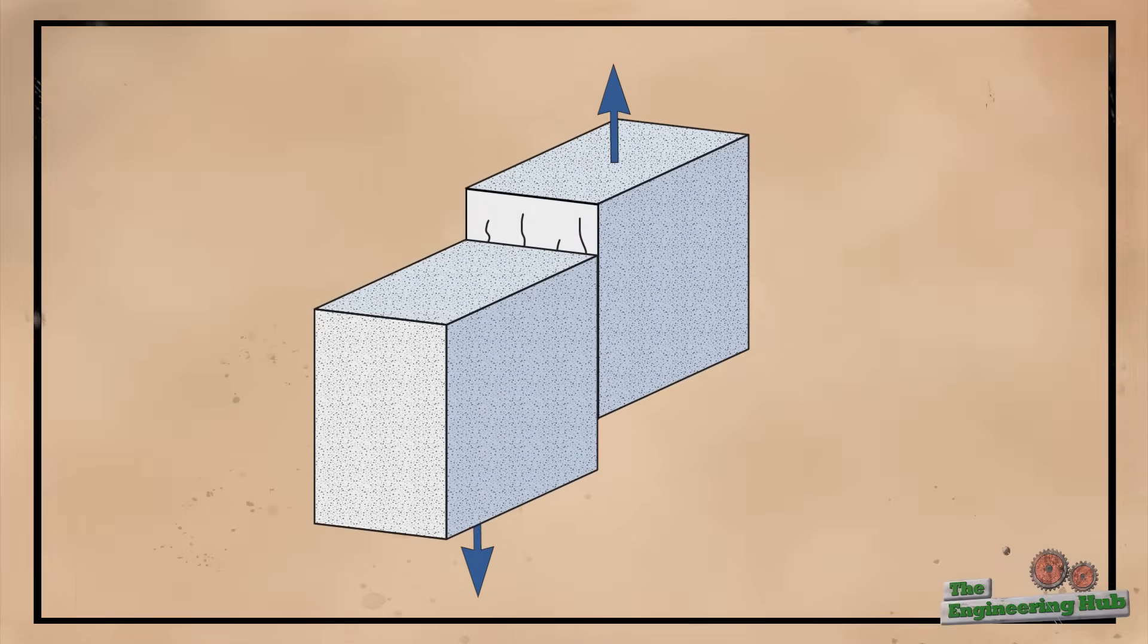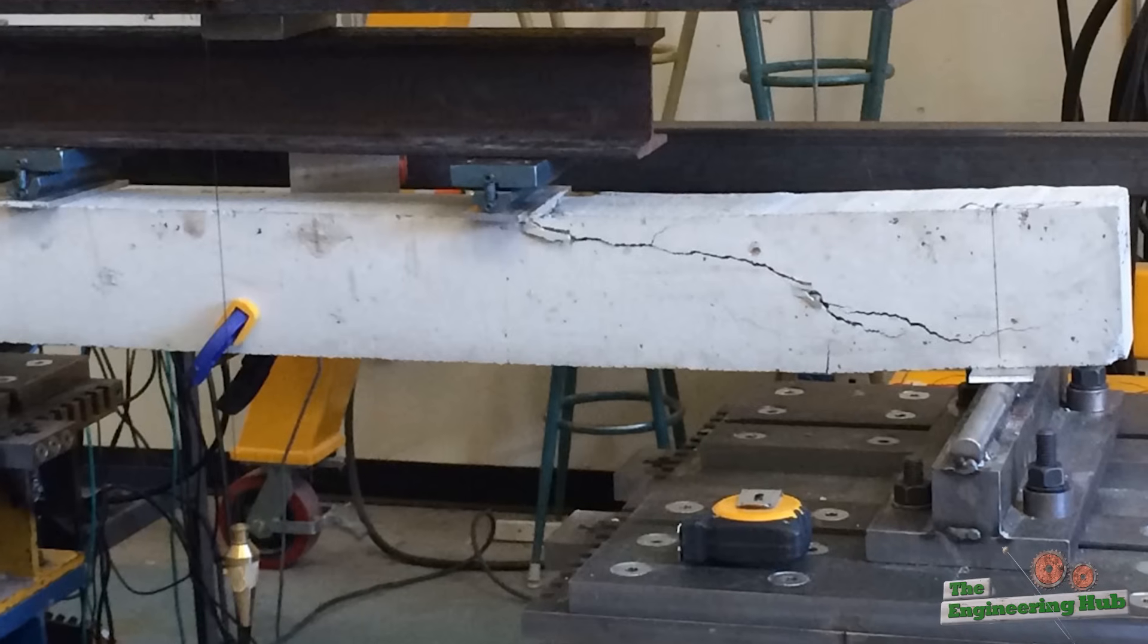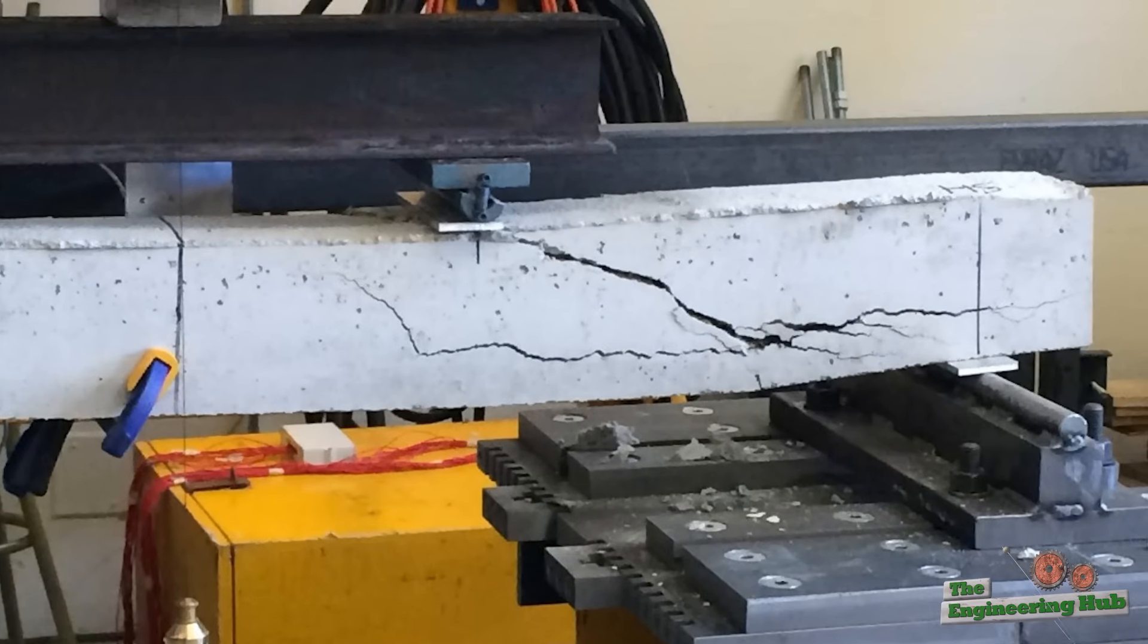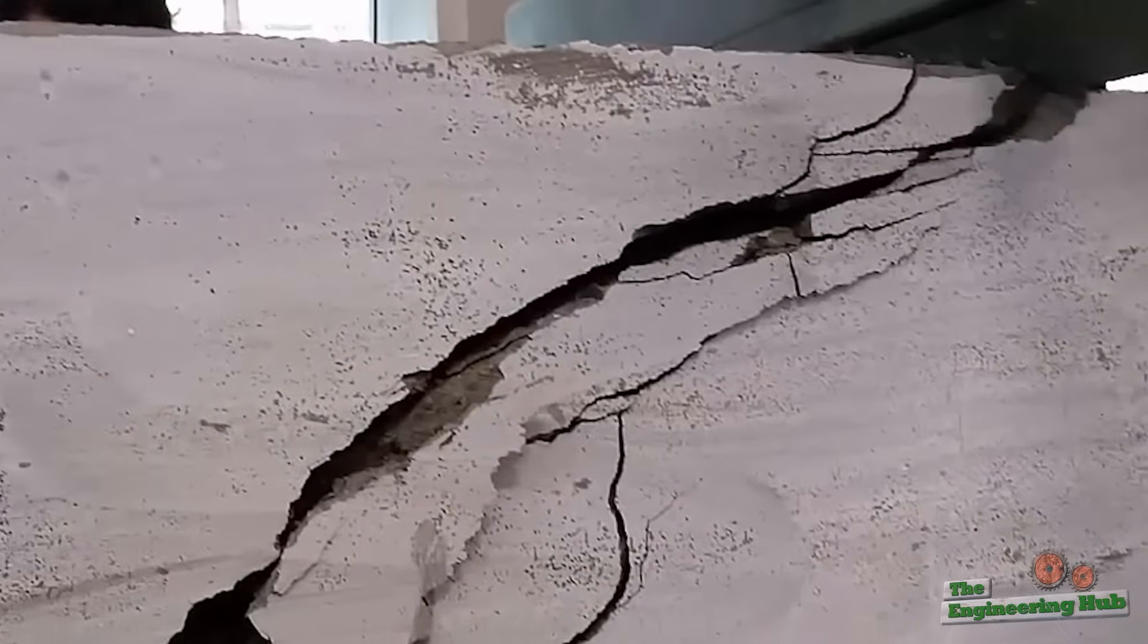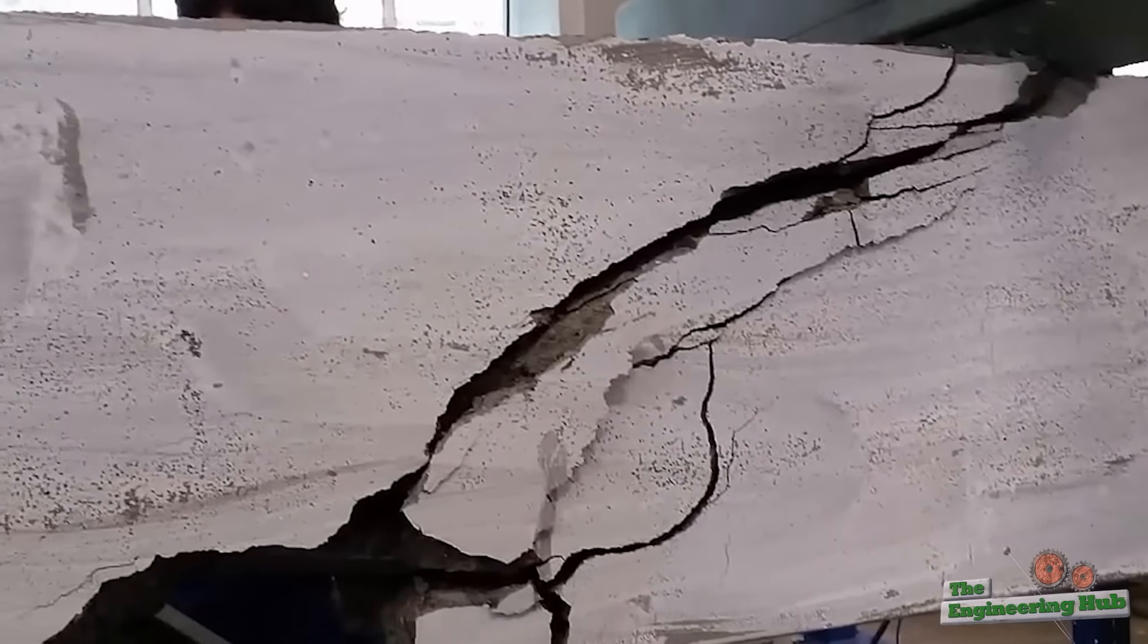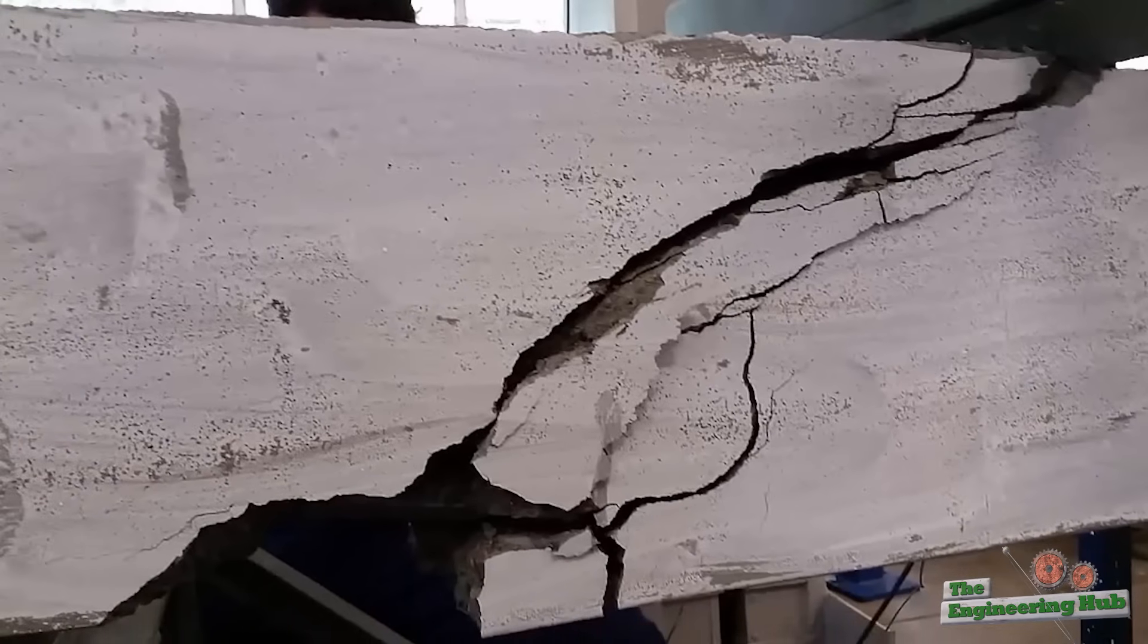Earlier we saw that the shearing forces act perpendicular to the beam, and yet the crack tends to follow a curved trajectory. Why is this the case? Why doesn't a beam crack vertically down across its entire depth? To answer this question, we need to get slightly more technical and dive into complex stress states caused by combined loading.